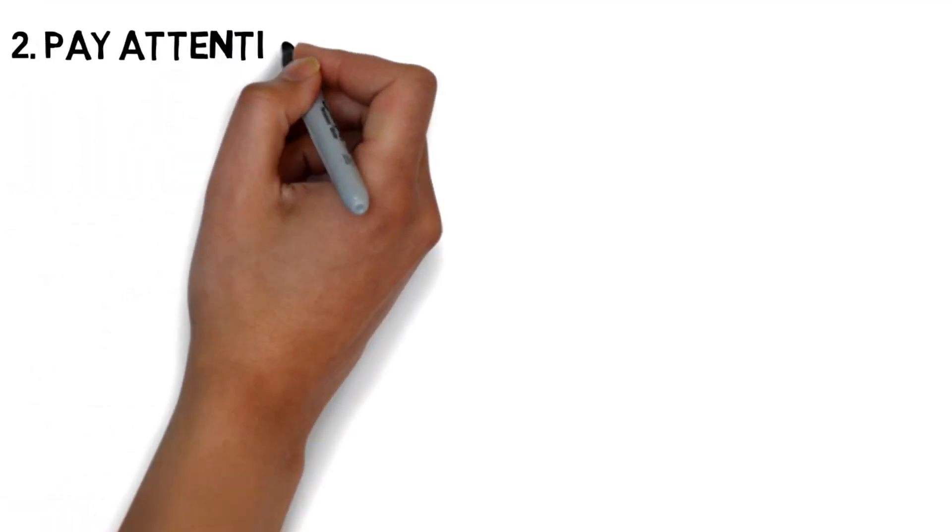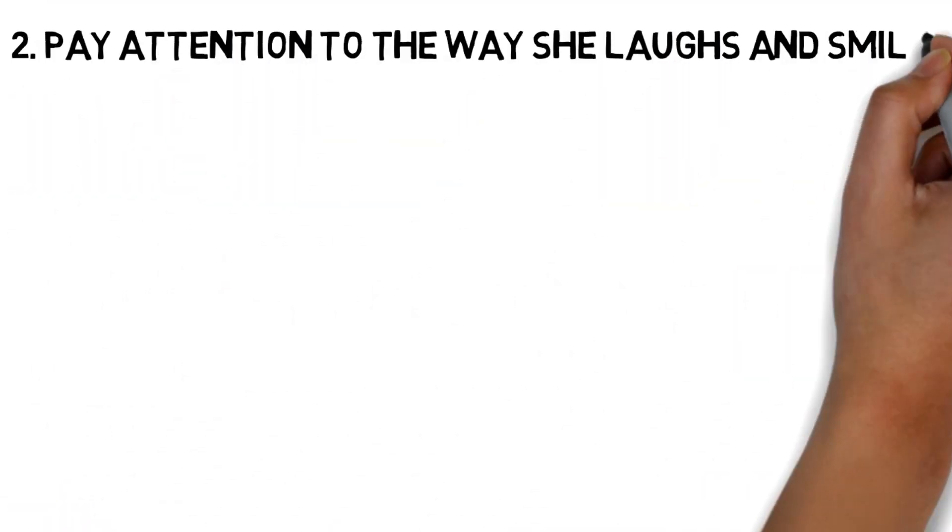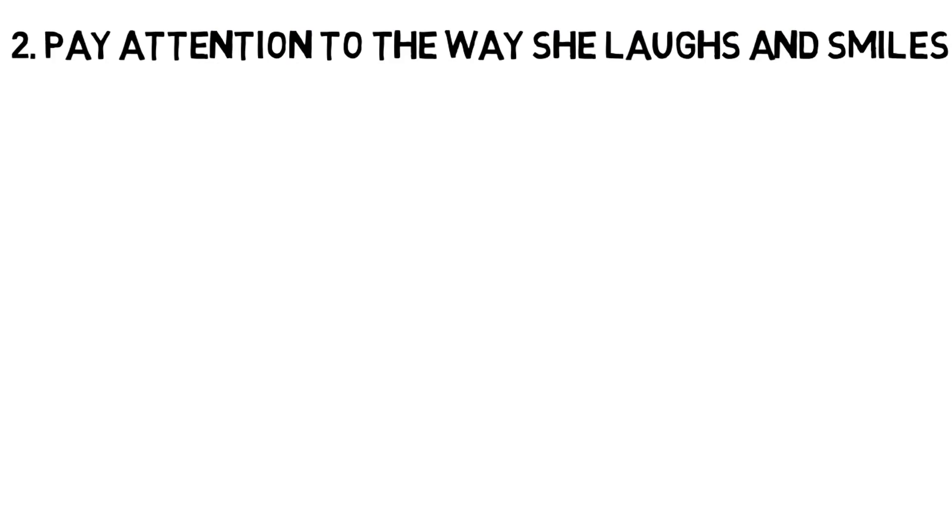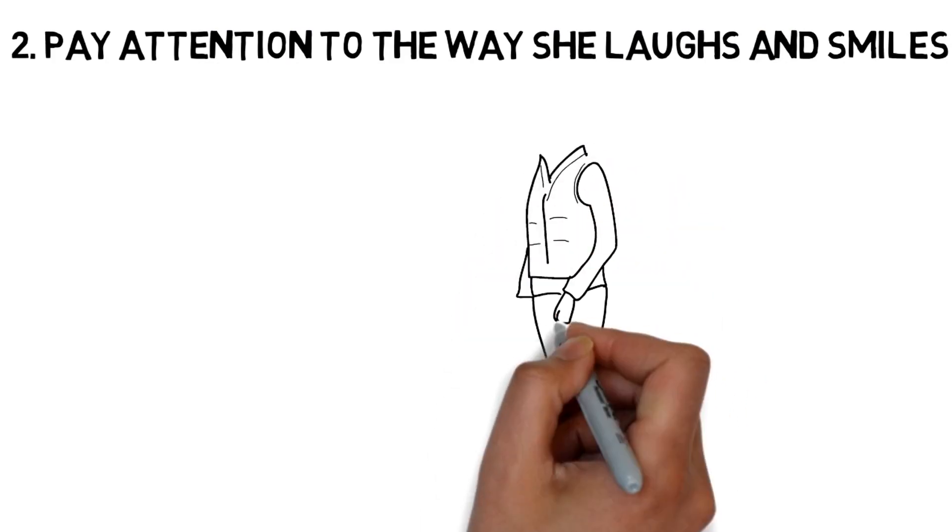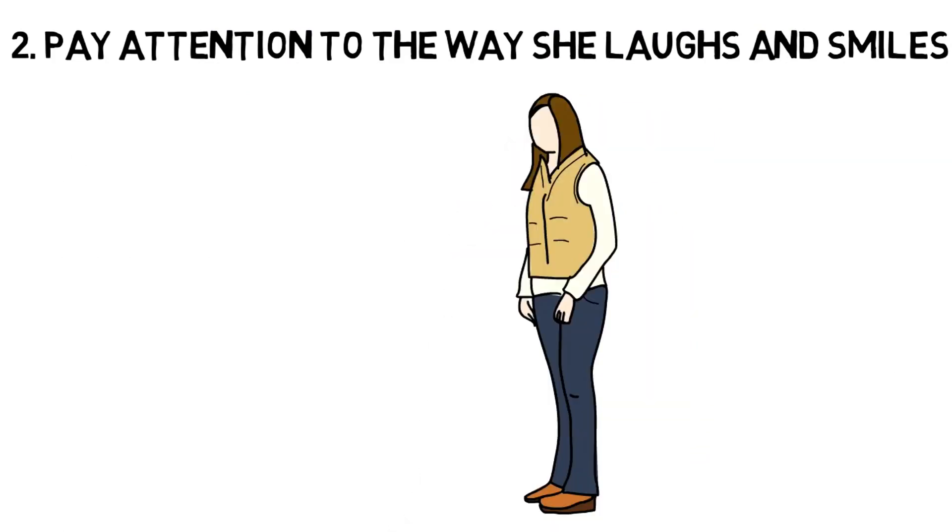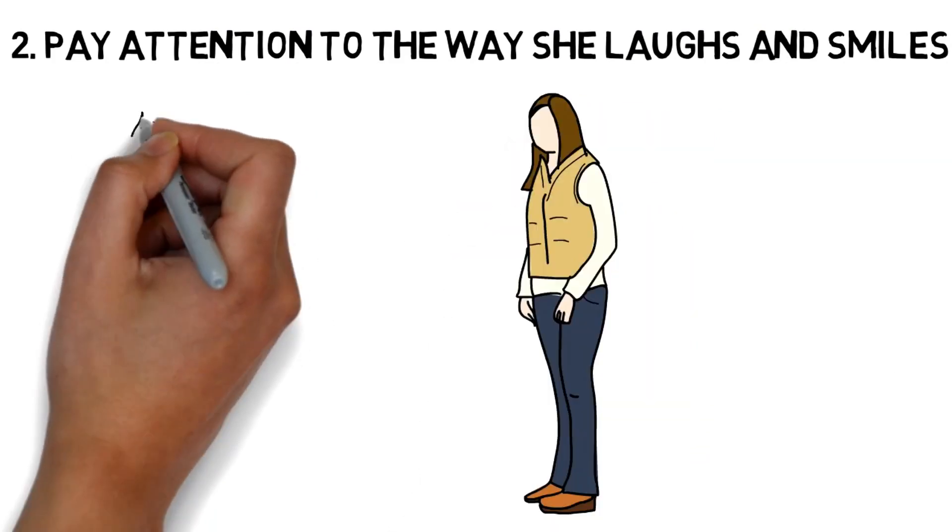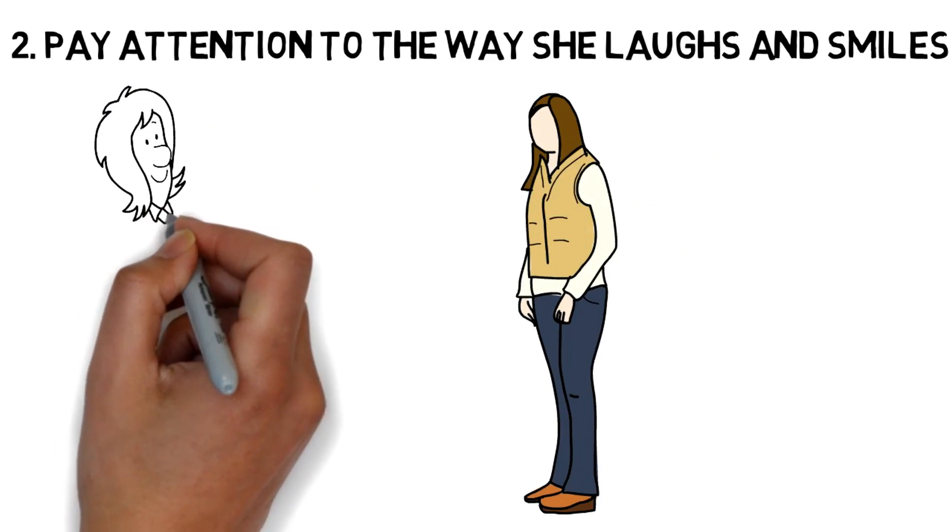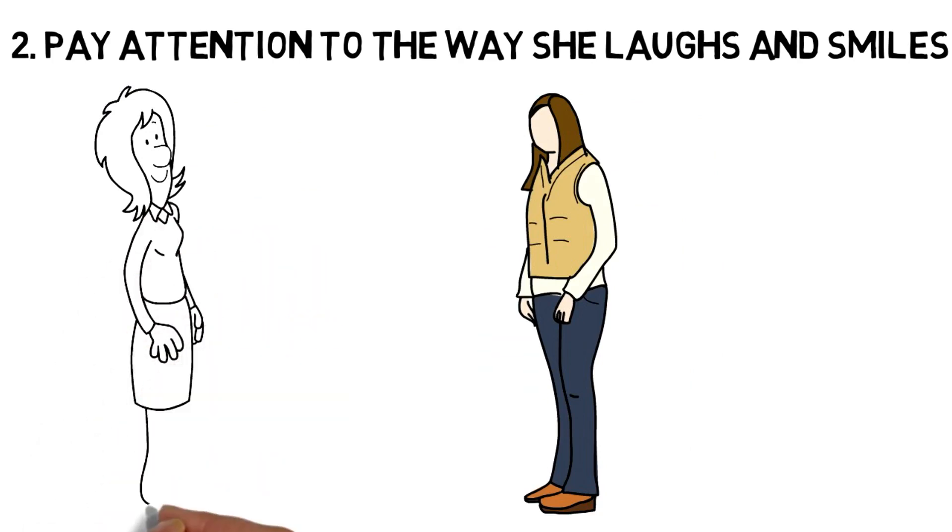2. Pay attention to the way she laughs and smiles. When a woman is in the company of a man she likes, she will tend to laugh more than usual, and sometimes even, let's not be afraid to admit it, for no great reason at all. It's actually a natural reflex. She usually tries to hide her stress and relieve the pressure by laughing.